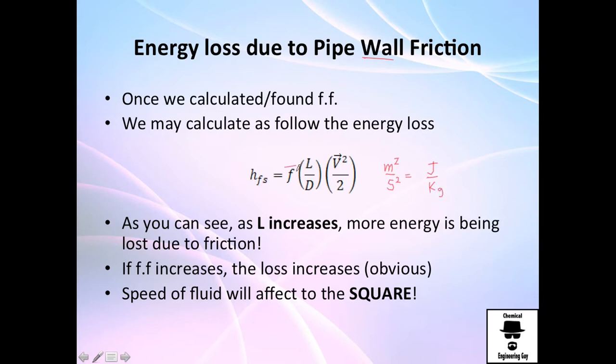And well, this is dimensionless, this is length or how long is the pipe, and this is diameter, so meter with meter will cancel, so this is dimensionless. And as you can see, we only have velocity to the square, which is meters per second to the square power, which is exactly this right here, and you can convert it to joules per kilogram with your respective units.